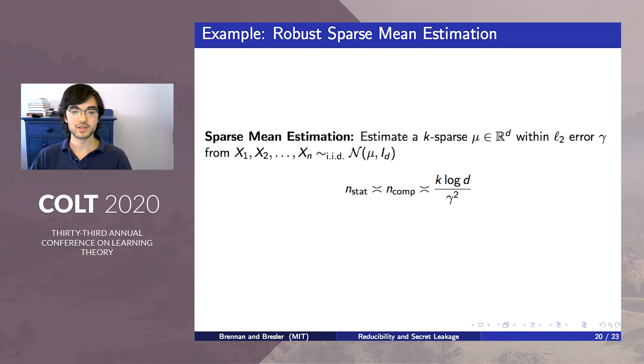To give the flavor of our lower bounds, I'll now state our main results for robust sparse mean estimation. In ordinary sparse mean estimation, the task is to estimate a K sparse vector mu in D dimensions with L2 error gamma when you're given access to iid Gaussian perturbations of mu. This problem is gapless. Efficient algorithms achieve the optimal sample complexity of K log D over gamma squared.